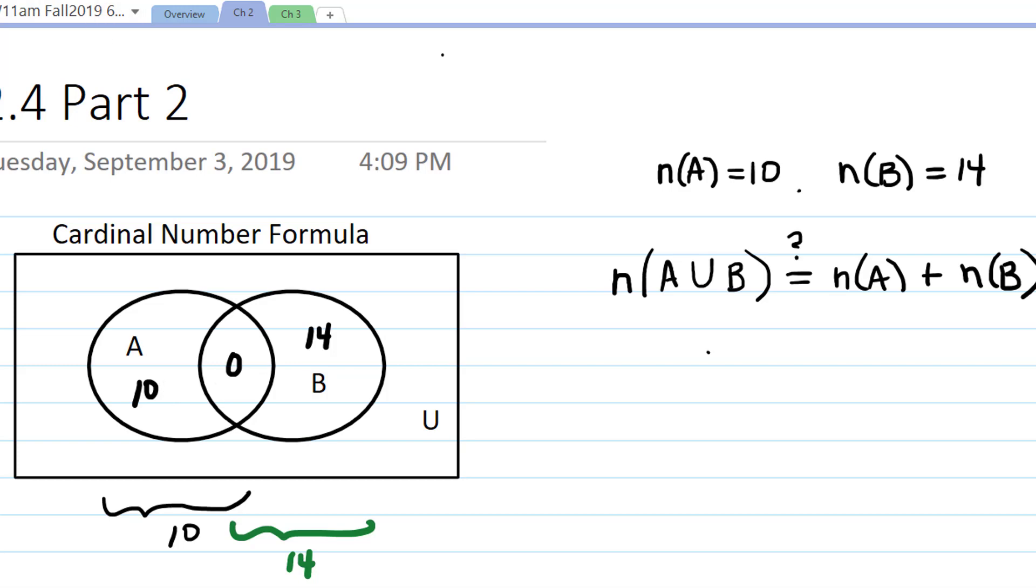But suppose that intersection were not empty. Suppose that the intersection had 2 in it. There were 2 elements that were in both set A and set B. Then in order for the number of elements in A to be 10, that means there must have been 8 that were in A but not B. And in order for there to be 14 in B, how many would have to have been in B but not A? 12 of them. In order for these to have a total of 10 in A and 14 in B.